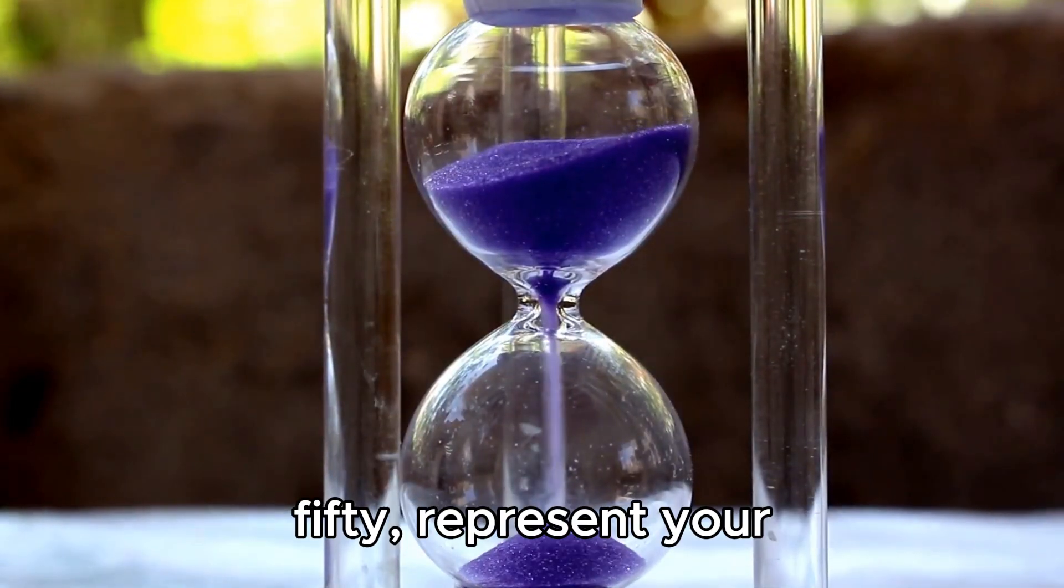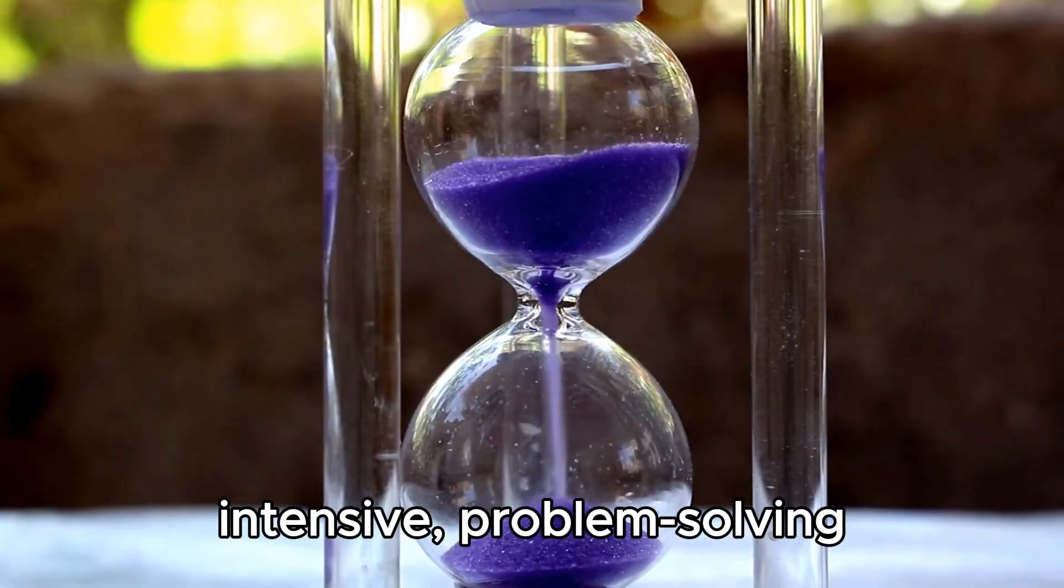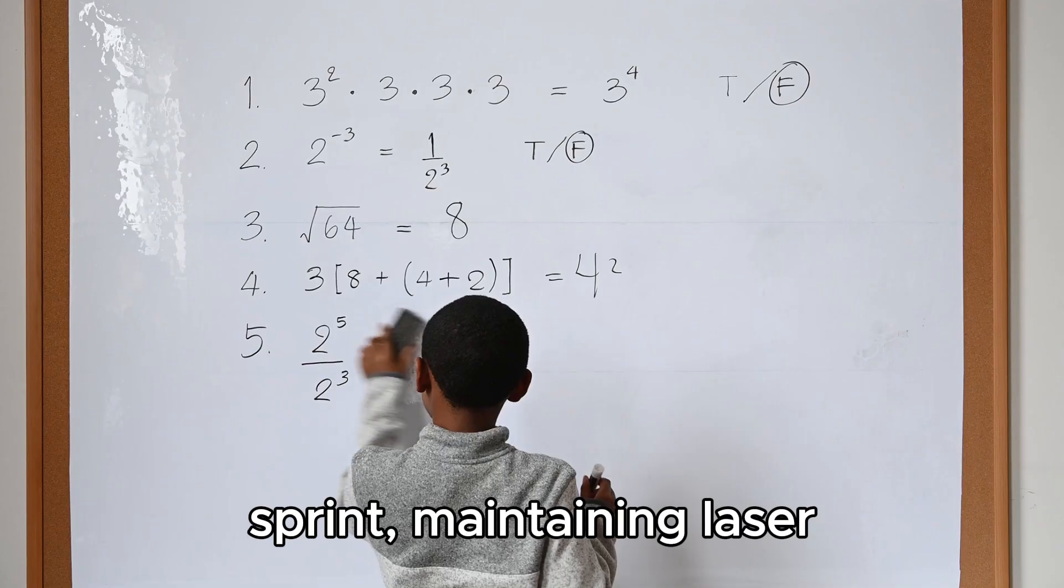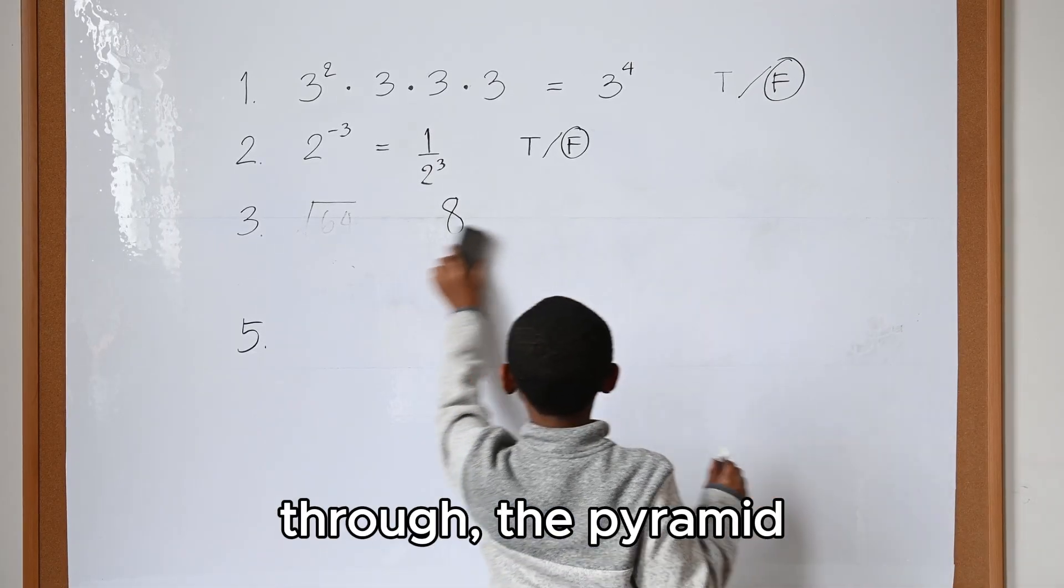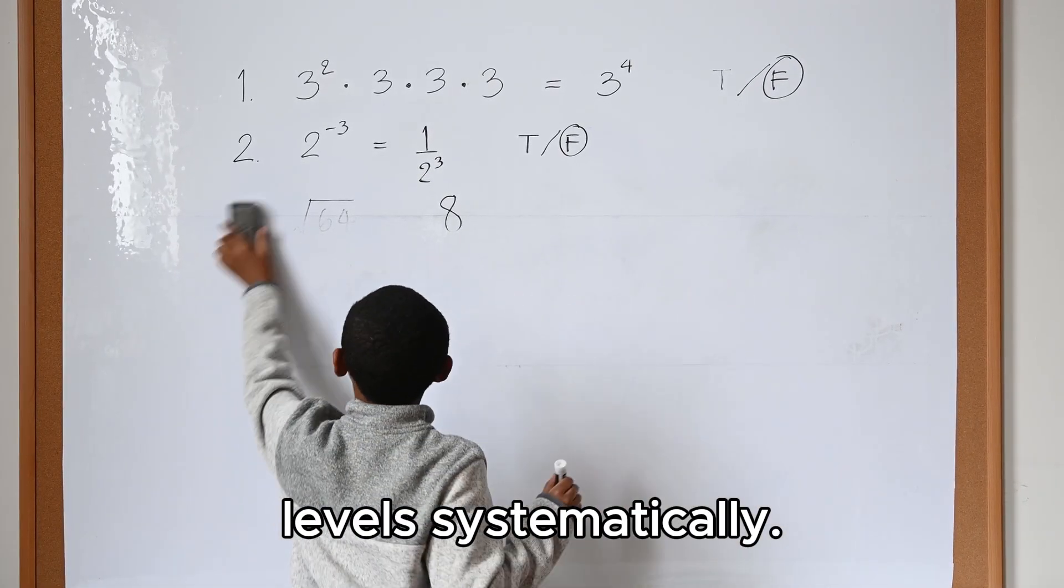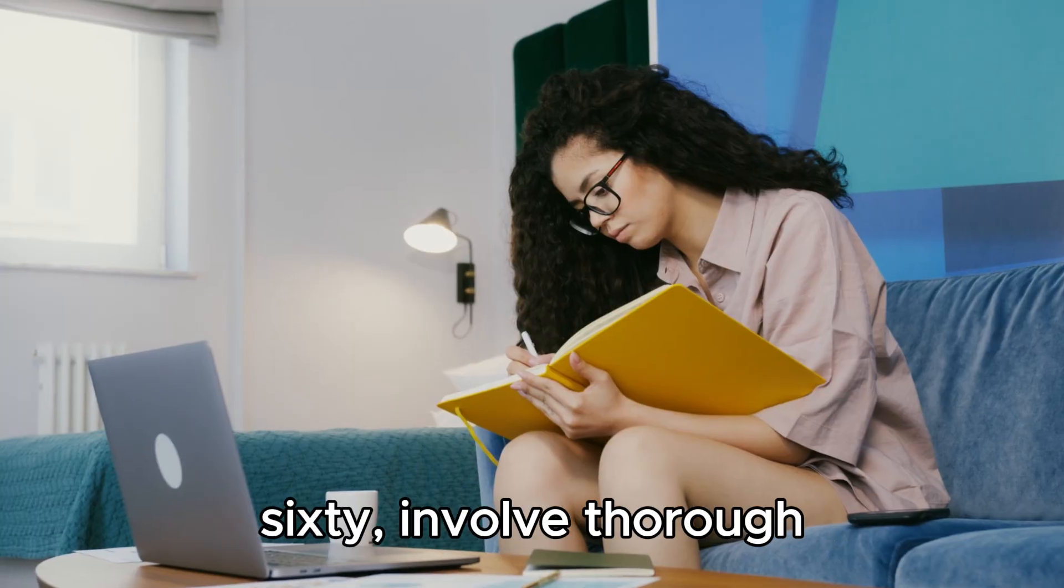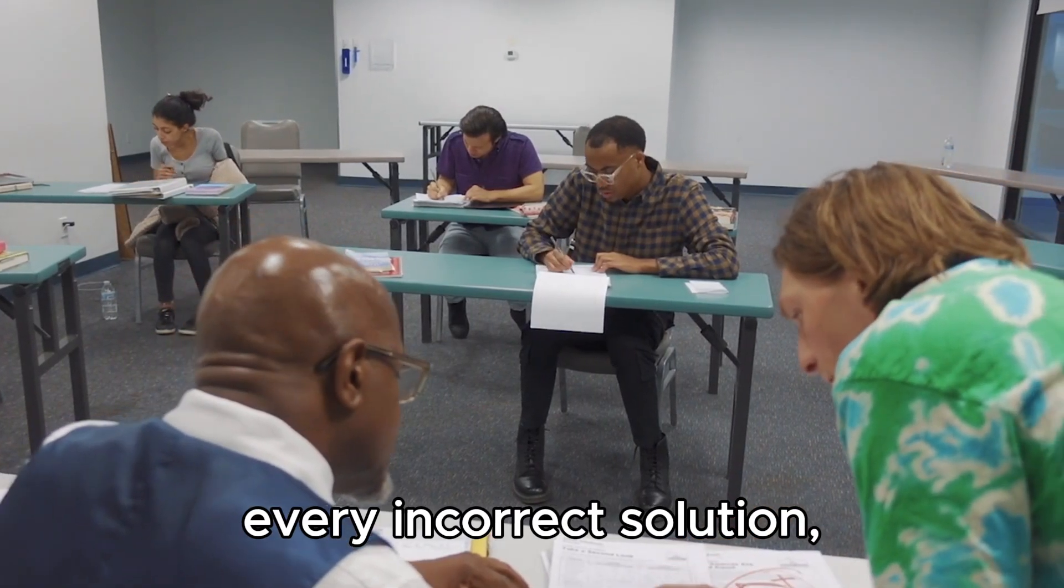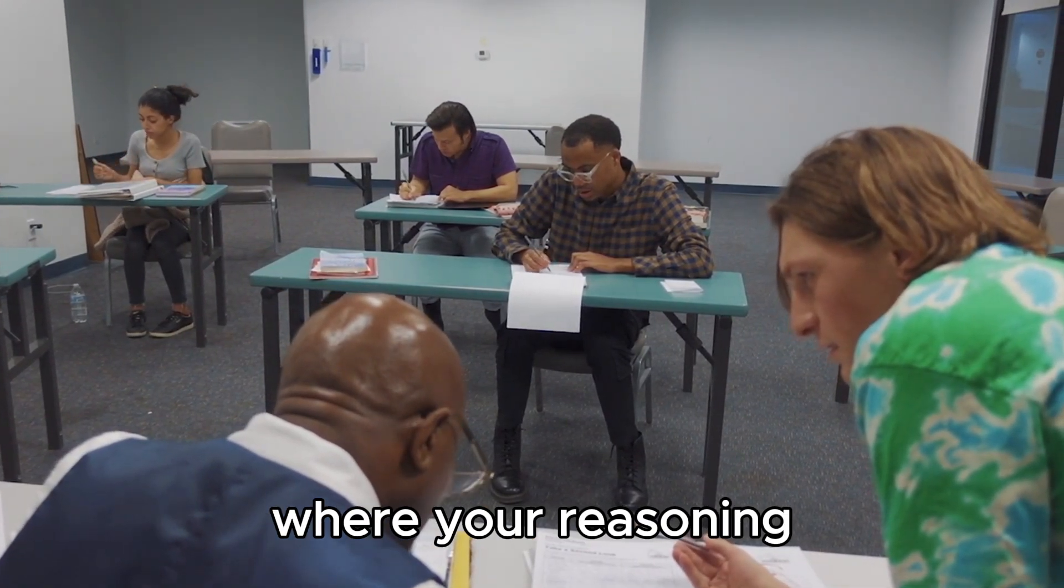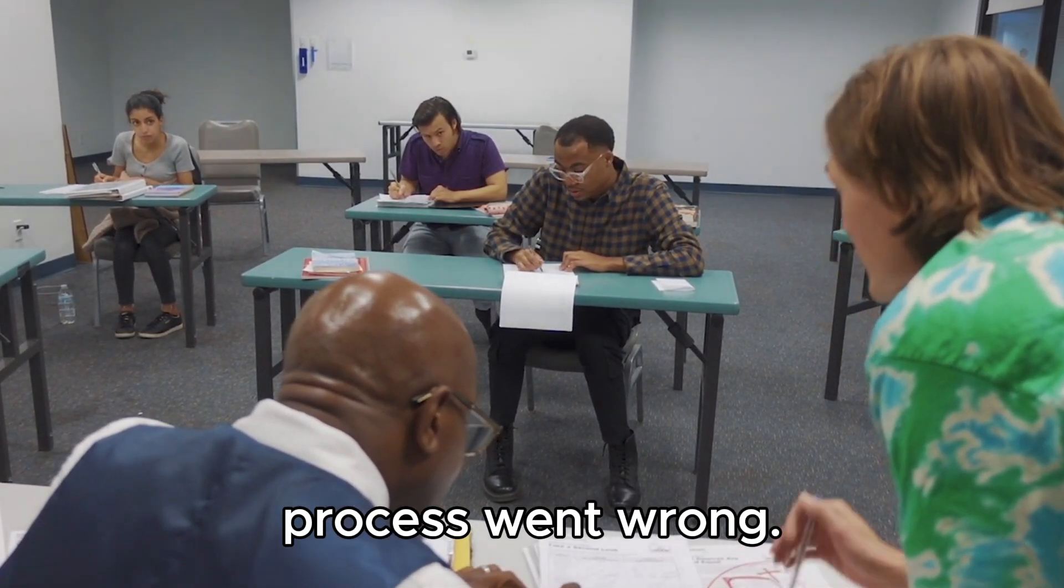Minutes 21 through 50 represent your intensive problem solving sprint, maintaining laser focus on one specific topic while progressing through the pyramid levels systematically. Minutes 51 through 60 involve thorough mistake analysis, examining every incorrect solution and identifying precisely where your reasoning process went wrong.